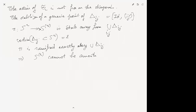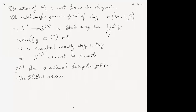So the symmetric power is not smooth. What we're going to do is resolve it — S^(r) has a natural desingularization, and this is the Hilbert scheme, which I'll denote as the Hilbert scheme of length-r Artinian analytic subschemes of S.